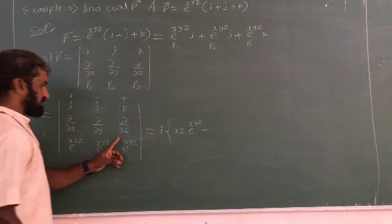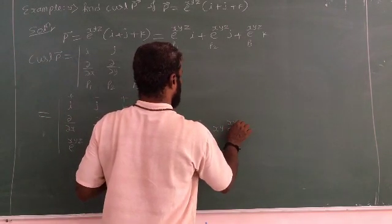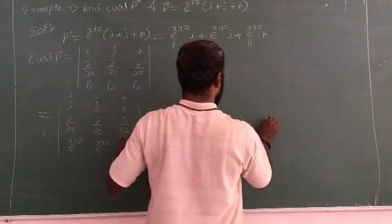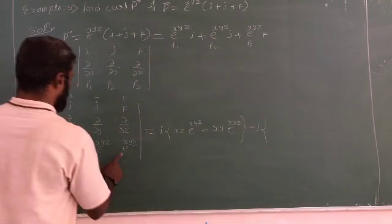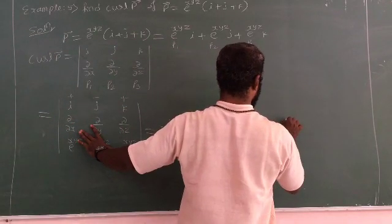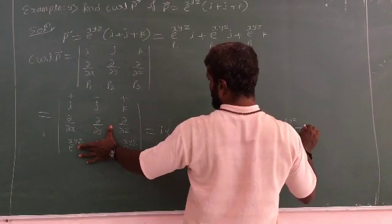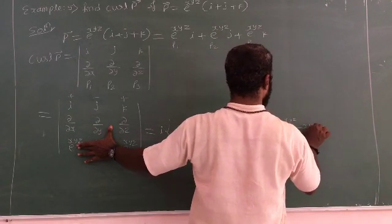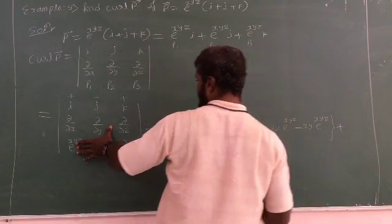Minus j with respect to x, z·e^(xyz), minus k with respect to z, so it is xy·e^(xyz) plus k.